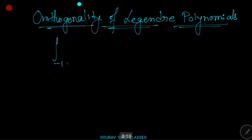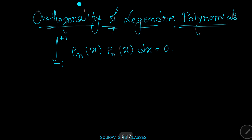The orthogonality condition states: integration from minus one to plus one of Pm(x) times Pn(x) dx equals zero, where n is not equal to m. Now we are going to prove this equation.